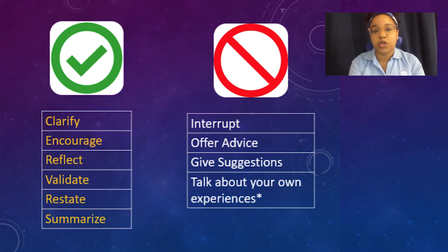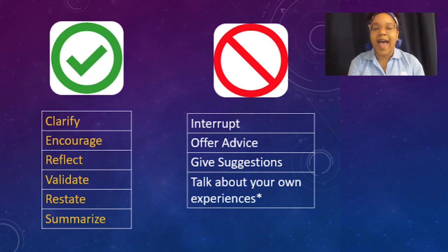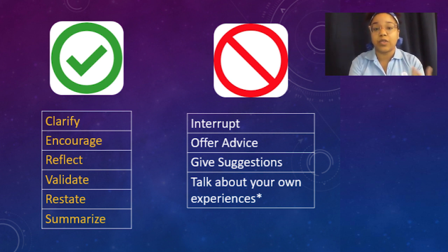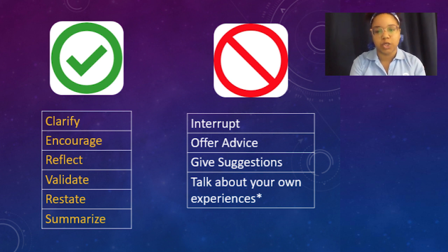Clarifying is making sure you understand what has been stated, then repeating key points using the person's specific words. Encouraging is asking something like 'What happened next?' or asking how you can support them further once they've finished talking. Reflecting could be stating, 'Based on what you shared, it sounds like you're pretty frustrated' — inputting whatever feeling word fits — and then clarifying to see if that's actually how they're feeling.